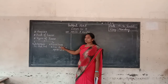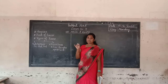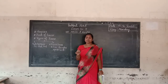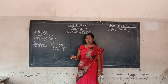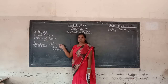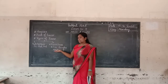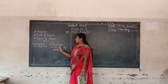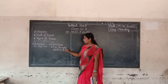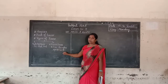A pakka house is made up of cement, iron, bricks, and steel. We generally find pakka houses in cities. Examples of pakka houses are bungalows and apartments.